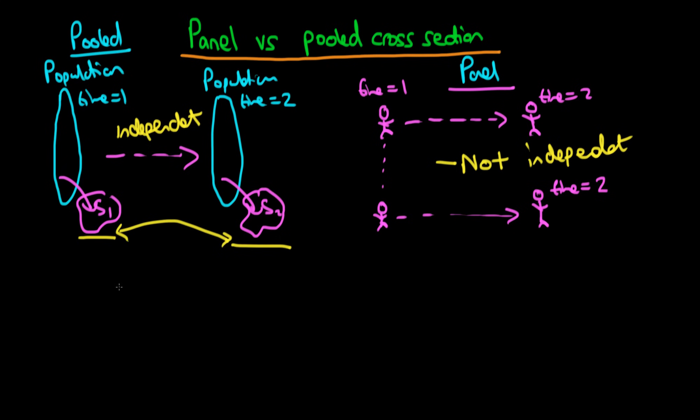So what are the benefits of panel data over pooled cross-sectional data? An example here might be that let's say we took a sample of individuals at time period one and we found that 50% of those individuals were unemployed and then we took another sample of individuals from that same population at some other point in time in the future and we found that 50% of those individuals were unemployed.